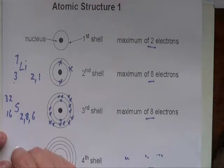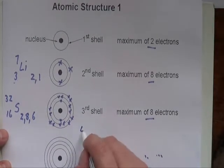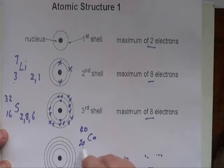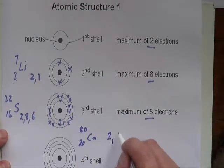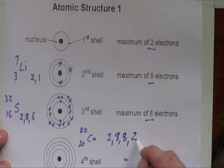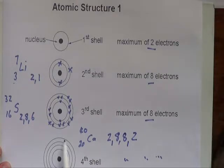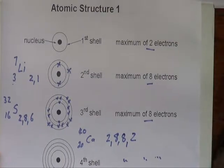They may take you into the fourth shell — calcium for example has 20 electrons. Two in the first shell, eight in the next bringing us to ten, then eight more in the third shell bringing us to 18, and two in the final outer shell. So the electron arrangement of calcium is 2,8,8,2.